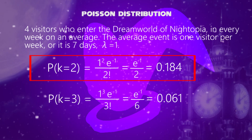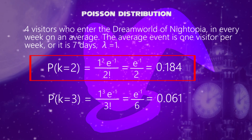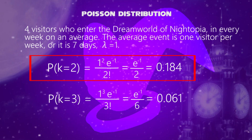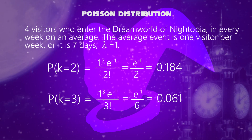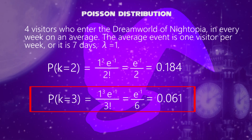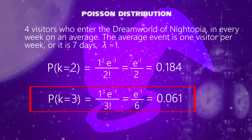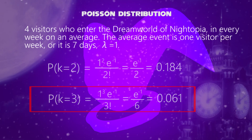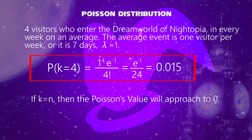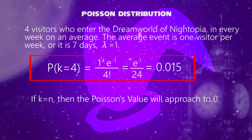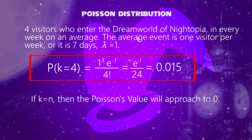When two visitors enter, say k equals two, we get 0.184. If three visitors enter, say k equals three, we get 0.061. And for four visitors, say k equals four, we get 0.015.